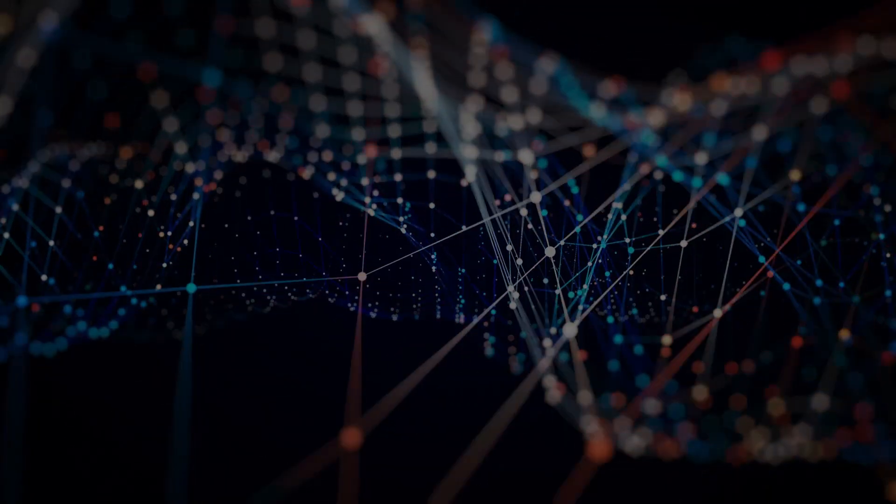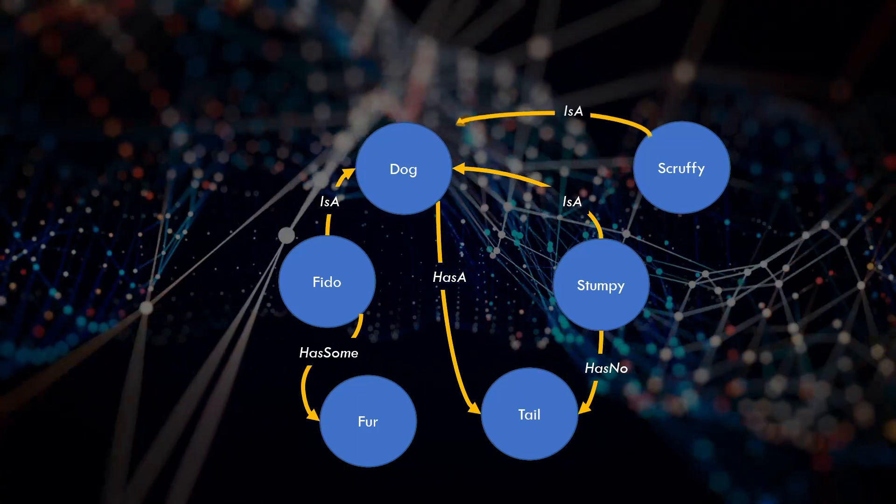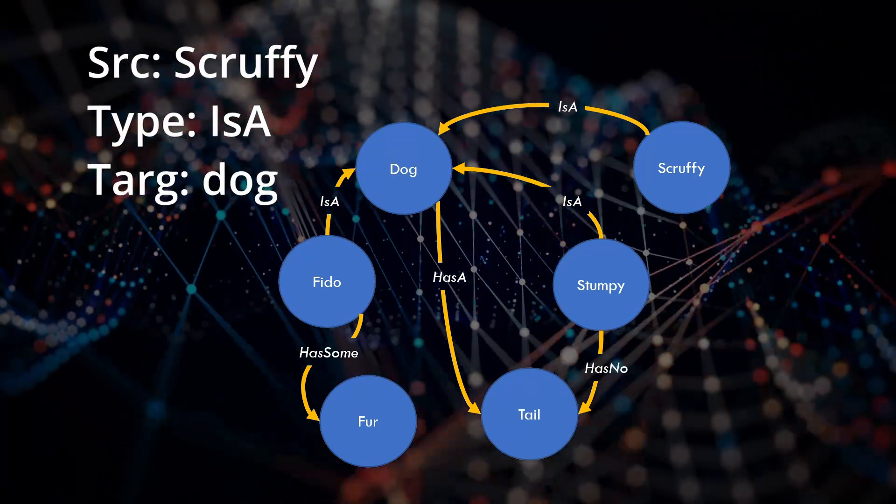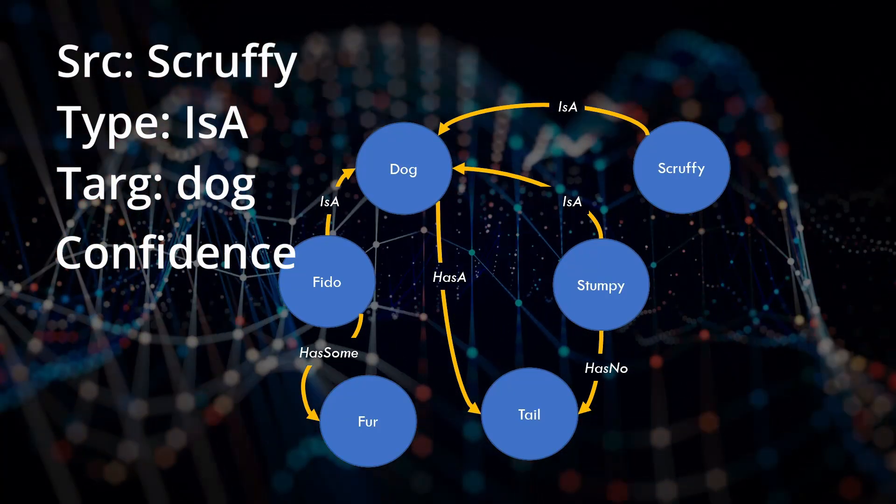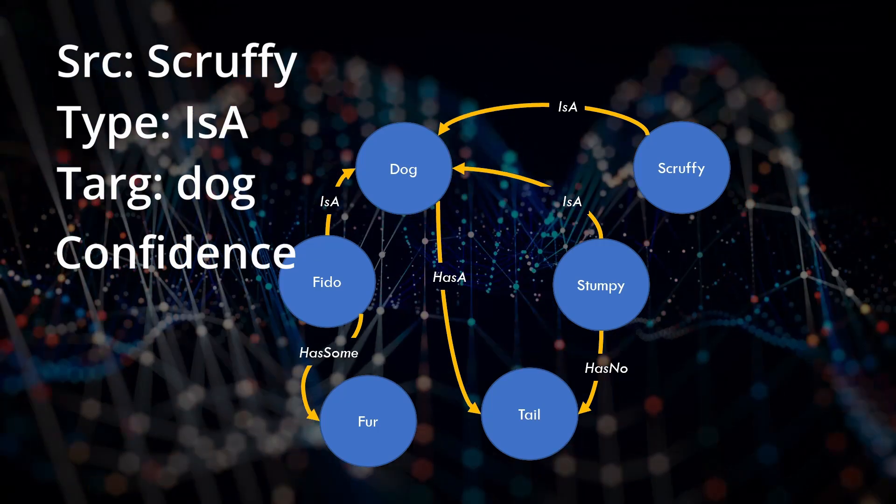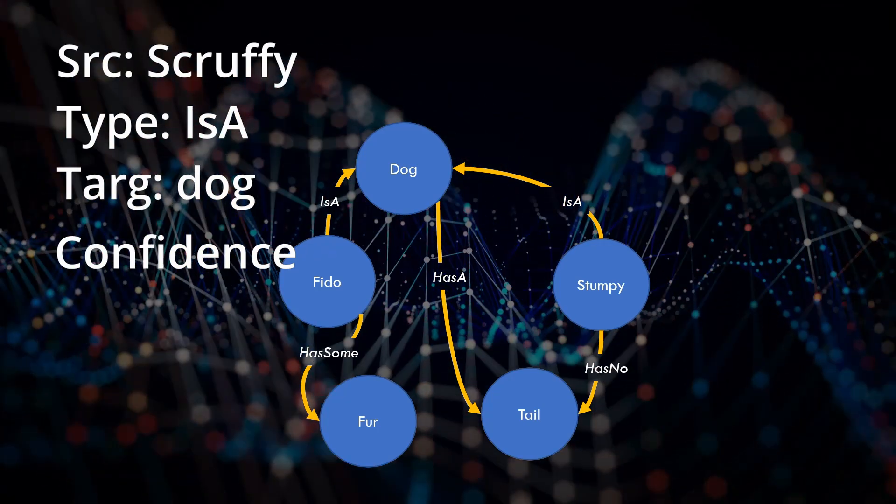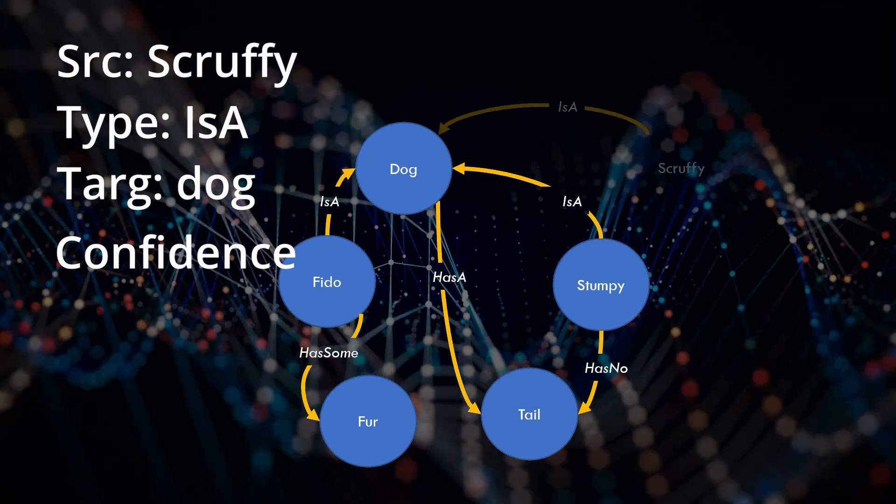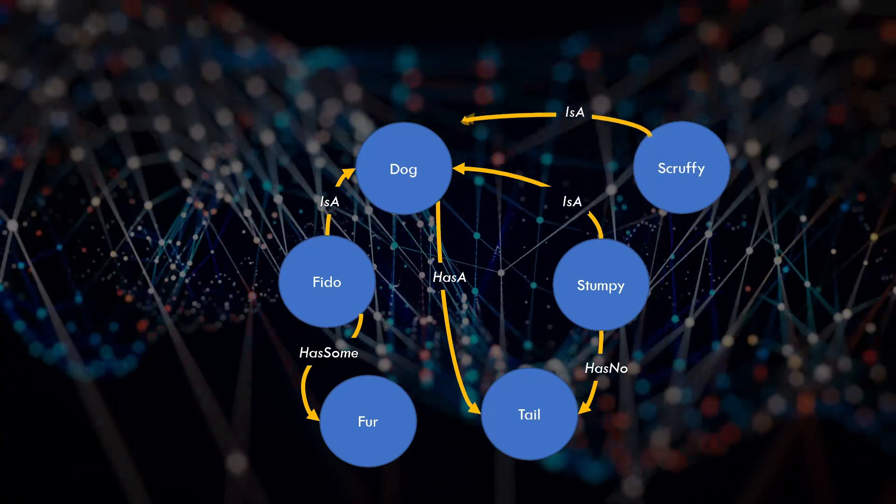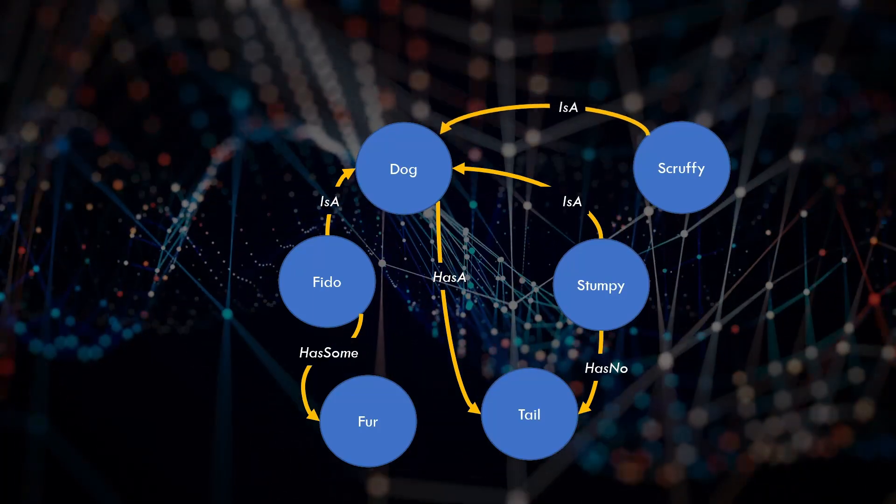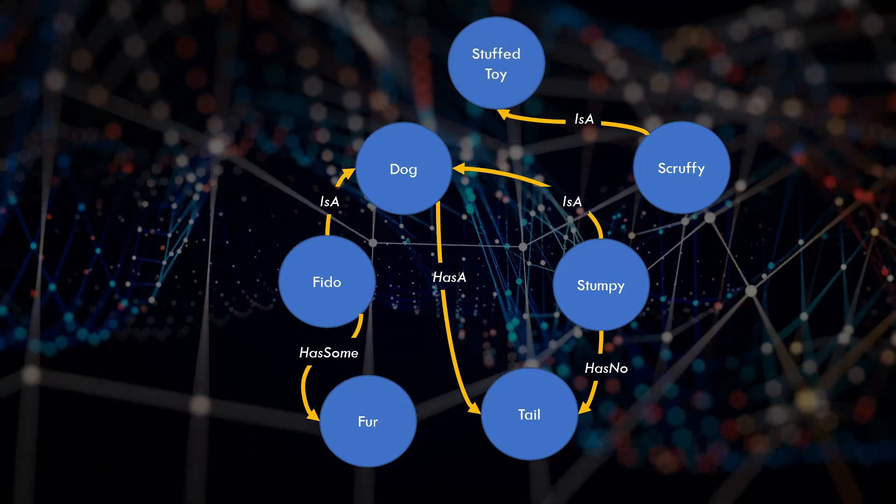What does this mean? When you add the Scruffy is a dog relationship to your mental graph, you include a level of confidence. So let's add confidence as a possible parameter to every relationship. It also means that your graph is flexible and quick at correcting erroneous information, but that's a topic for another video.